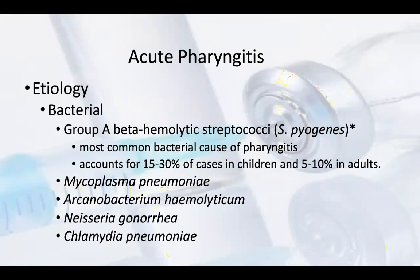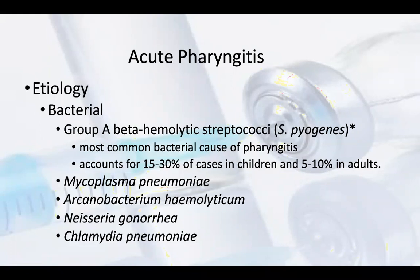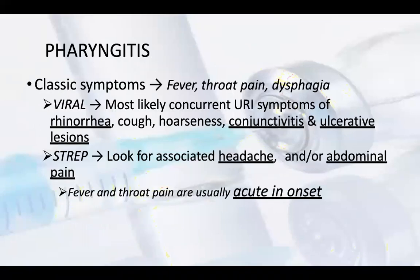There can be viral pharyngitis or bacterial pharyngitis. For bacterial, Group A beta-hemolytic streptococci is the most common bacterial cause of pharyngitis. It accounts for 15-30% of cases in children and 5-10% in adults. There can also be Mycoplasma pneumoniae, Arcanobacterium haemolyticum, Neisseria gonorrhoeae, and Chlamydia pneumoniae causing bacterial pharyngitis.